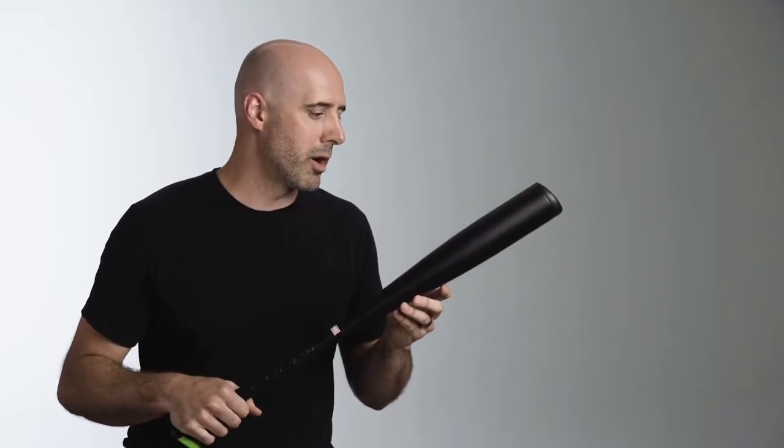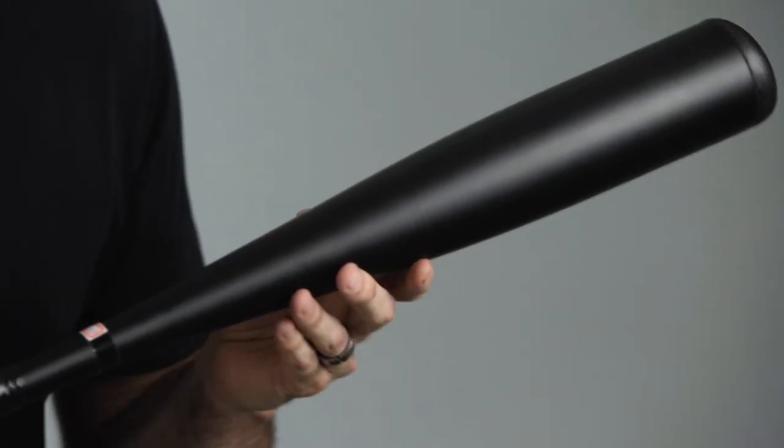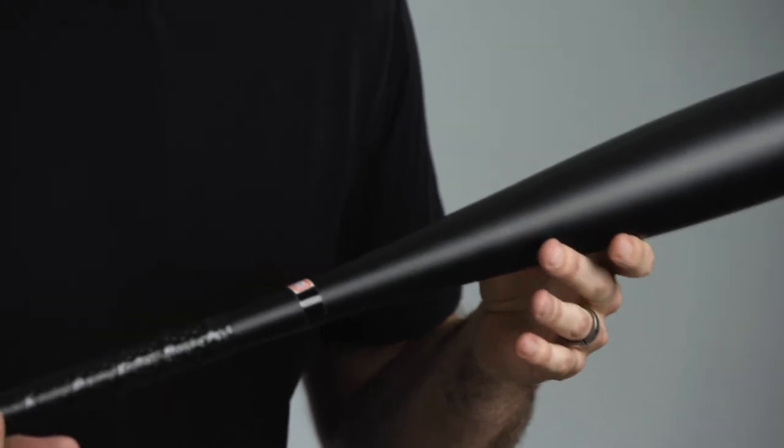The bats are bigger which means that you can square up the ball a little more easily but they're also a little bit heavier, meaning you need to be a stronger player to swing them.